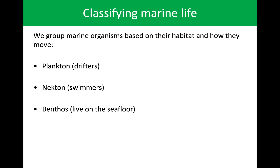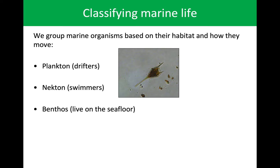Beyond that we have the nekton — things that can swim. These are the fish and everything we think about when we consider the ocean, as large as a whale all the way down to some of the smallest fish. And then finally we have our benthos — anytime we're talking about benthos it's going to be on the seafloor. That includes things living on the seafloor like crabs and lobsters, but also things inside the seafloor like worms and bacteria that are actually in the sediment.